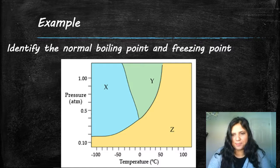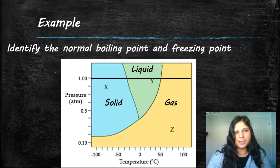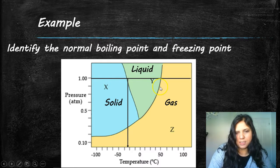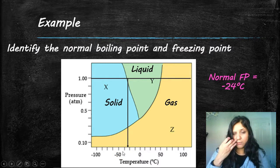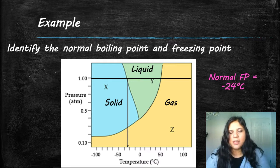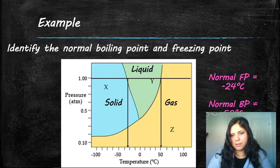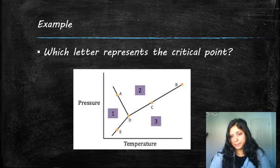For the practice example, first identify the regions for solid, liquid, and gas, then draw a line at one atmosphere. Where that line crosses the solid-liquid boundary gives the normal freezing point — about negative 24°C. Where it crosses the liquid-gas boundary gives the normal boiling point — about 50°C. The critical point is represented by letter B, at the end of the liquid-to-gas line.